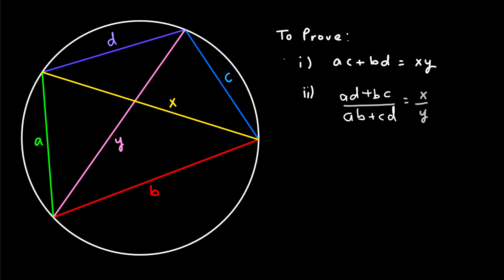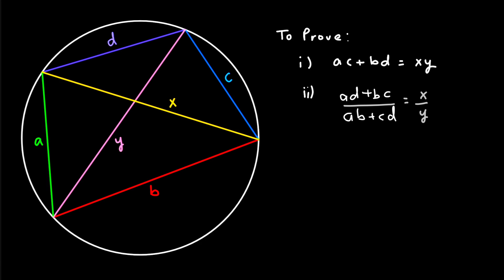How can we prove both of these relations? There are two equations which satisfy the relation. The first one looks very neat and clean whereas the second one is looking quite messy. But to prove the first equation is very tricky whereas to prove the second equation is quite easy. So we will start the solution by proving the first one.